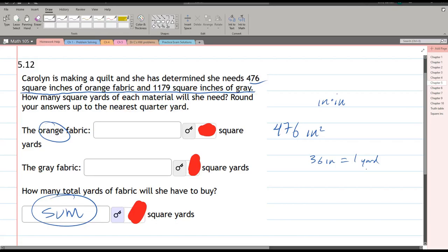Now what we need to do is square both sides. So on the left side you have 36 squared inches squared equals one squared yard squared. Of course one squared is one so it's just one yard squared.